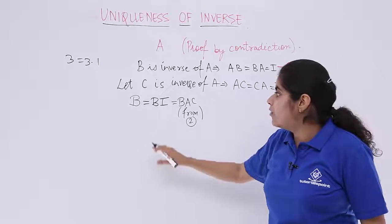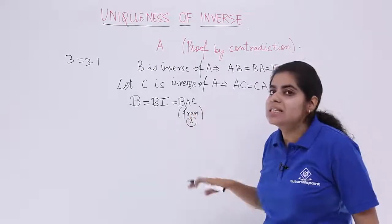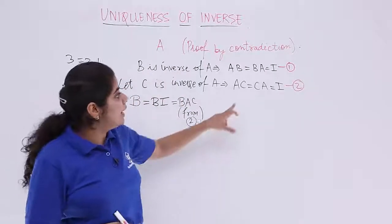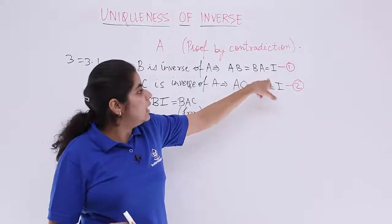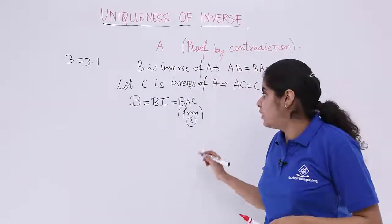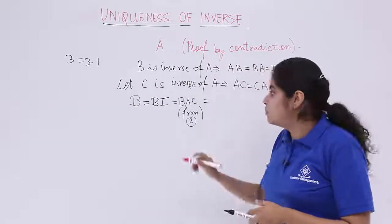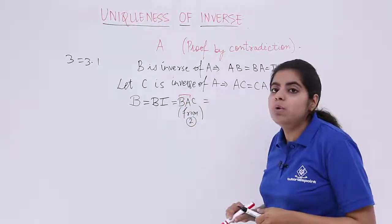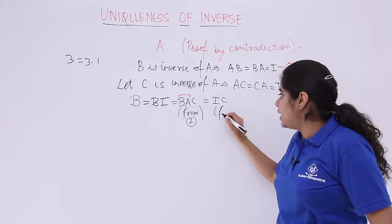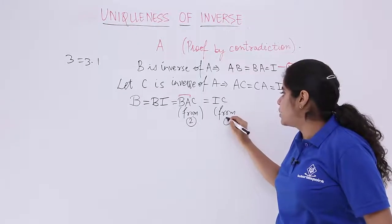Now I have B is equal to BAC. What is the value of BA? BA is equal to I from equation 1. So from equation 1 I can write this BA as I, and that is from my equation number 1.